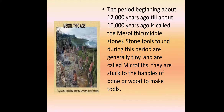The period beginning about 12,000 years ago till about 10,000 years ago is called the Mesolithic or middle stone age. Stone tools found during this period are generally tiny and are called microliths. They are stuck to handles of bone or wood to make tools. Megaliths are large pieces of stone, and microliths are small pieces of stone.